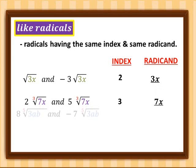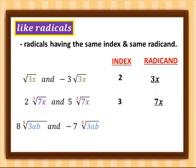For the third example, we have 8 fifth root of 3ab and negative 7 fifth root of 3ab. So the index here is 5 and the radicand is 3ab. We are learning about like radicals since later you are only allowed to combine like radicals.